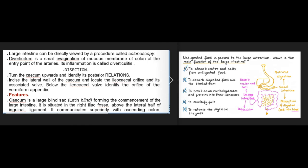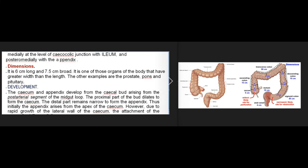The large intestine can be directly viewed by colonoscopy. A diverticulum is a small evagination of the mucous membrane of the colon at the entry point of arteries; its inflammation is called diverticulitis. The cecum is a large blind sac forming the commencement of the large intestine, situated in the right iliac fossa above the lateral half of the inguinal ligament. It communicates superiorly with the ascending colon, medially with the ileum at the cecocolic junction, and posteromedially with the appendix. It is six centimeters long and 7.5 centimeters broad.